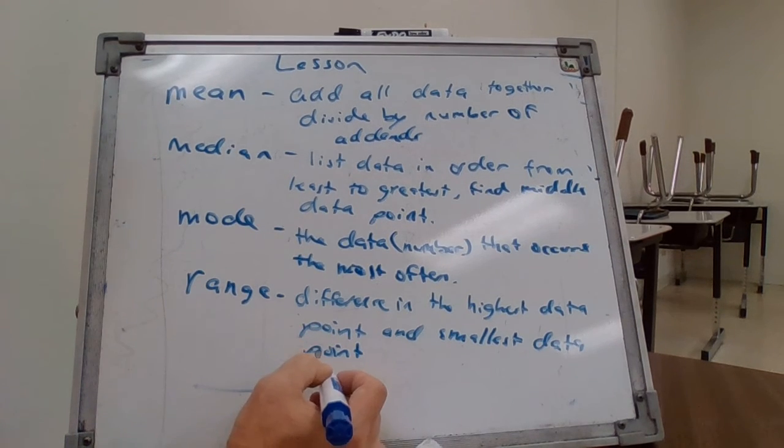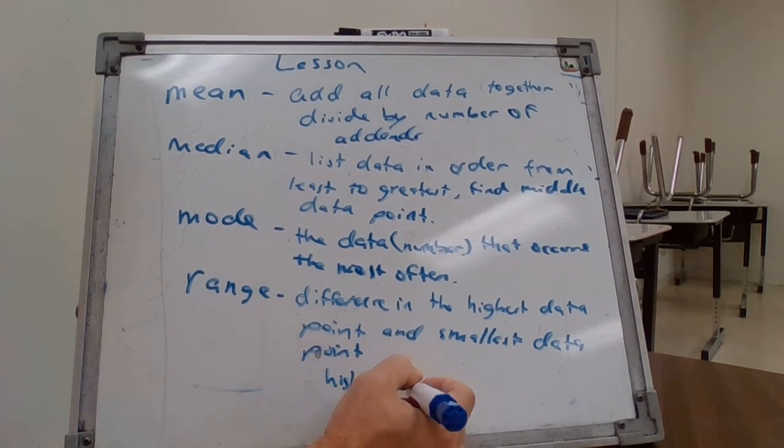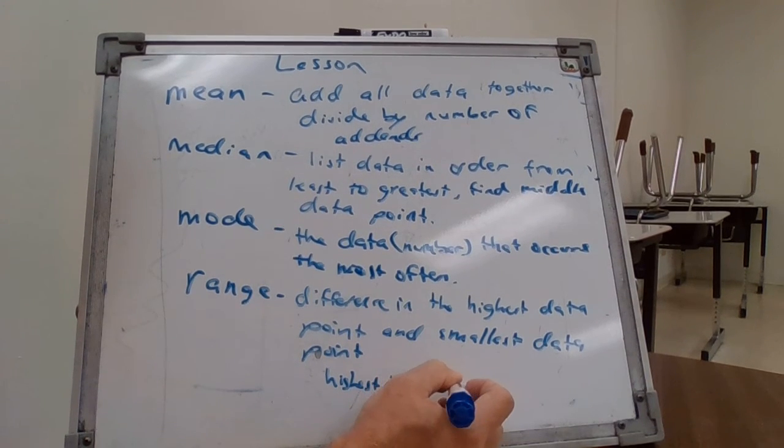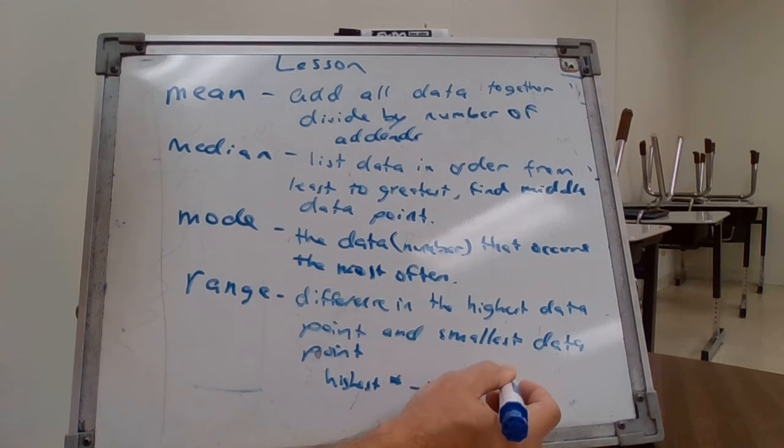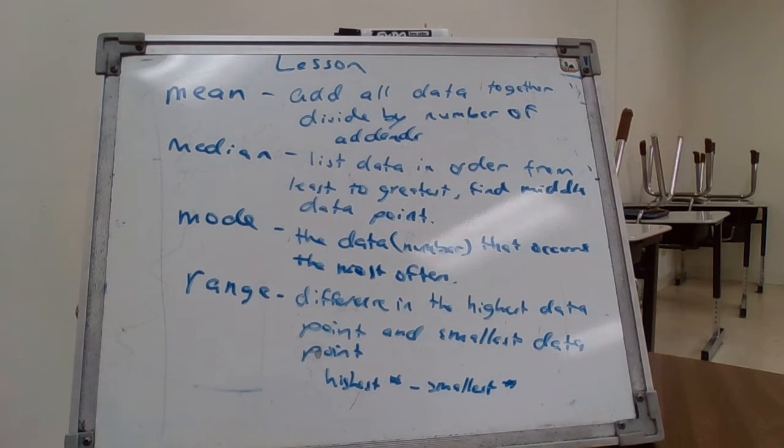Okay, range. It's the difference in the highest data point. So what we do is take the highest number, subtract smallest number. That's a good synopsis of it, but officially it's the definition.